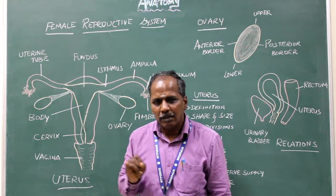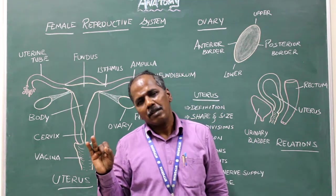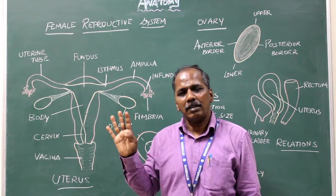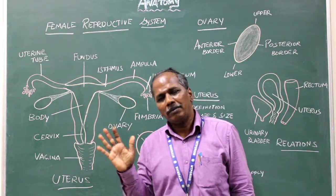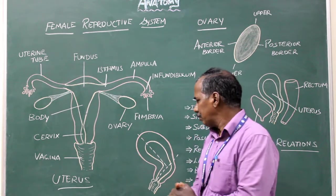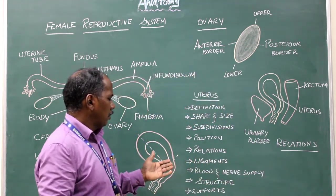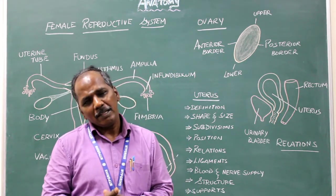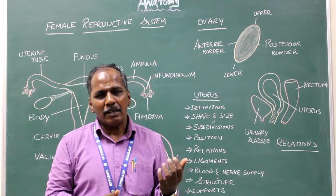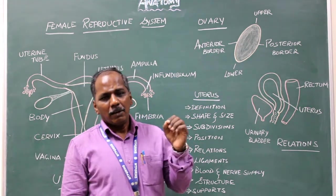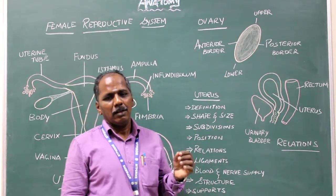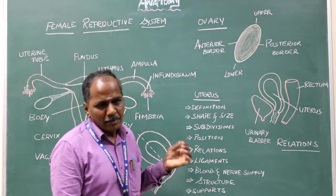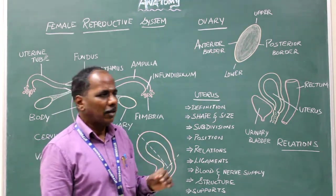Ligaments of the uterus: number one, broad ligament; number two, round ligament of the uterus; number three, uterosacral ligament; number four, transverse cervical ligament; number five, pubouterine ligament. Blood supply: it is supplied by the right and left uterine arteries. Venous drainage: it is drained by the right and left uterine veins. Nerve supply: it has sympathetic and parasympathetic — sympathetic by T12 to L2 segments of the spinal cord, parasympathetic by pelvic splanchnic nerves.